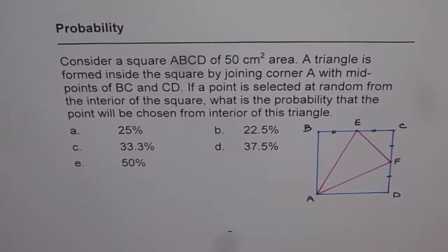Probability. Consider a square ABCD of 50 cm square area. A triangle is formed inside the square by joining corner A with midpoints of BC and CD. If a point is selected at random from the interior of the square, what is the probability that the point will be chosen from the interior of this triangle?